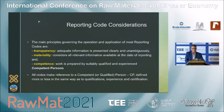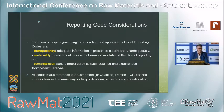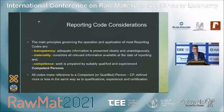The main principles governing the operation and application of most reporting codes are: transparency — adequate information is presented clearly to the public; materiality — all relevant information available at the date of reporting is considered; and competence — work is prepared by suitably qualified and experienced competent persons. All codes make reference to a competent or qualified person, or CP for short, defined more or less in the same way as to qualifications, experience, and certification. It is important to keep transparency and competence in mind, because there are certain implications when we use machine learning techniques in producing results reported under these codes.